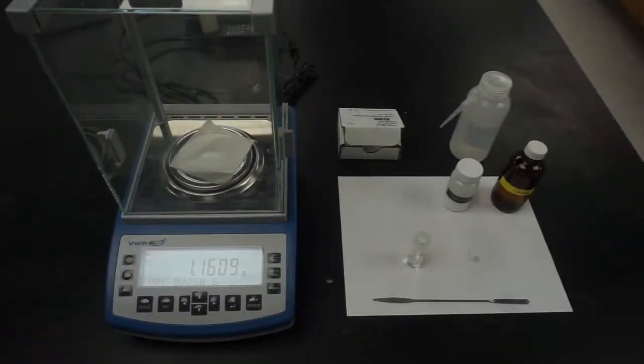First, measure out sodium bromide, about 1.1 grams, and record the exact mass of it in your notebook.